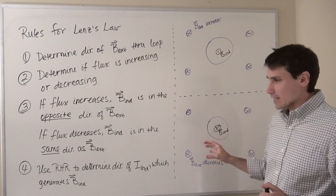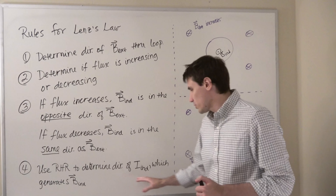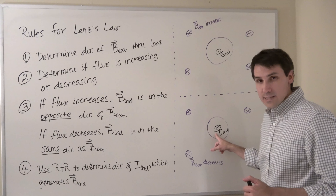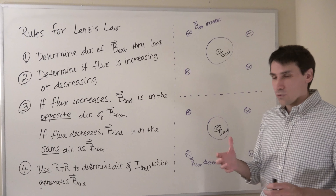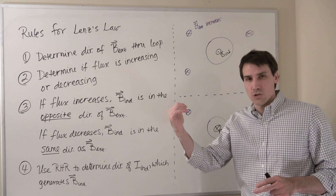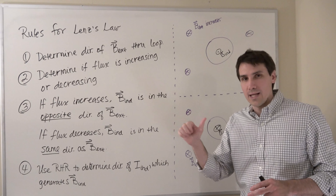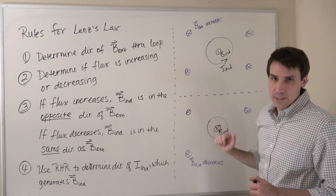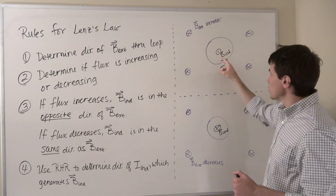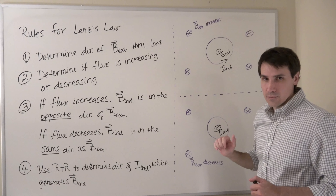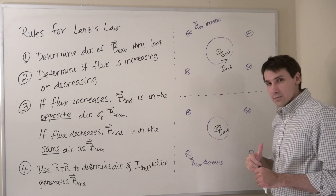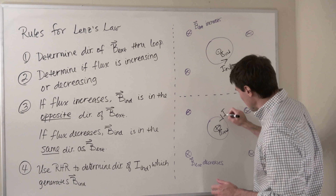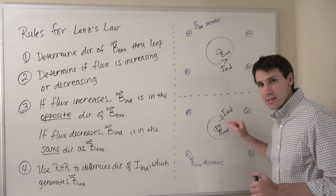Now we have the direction of our induced magnetic field, and there's only one step left: use the right-hand rule to determine the direction of the induced current. The induced current generates this magnetic field at its center, so we use the right-hand rule for loops of current — fingers curl in the direction of the current and the thumb points in the direction of the magnetic field. For the top example, thumb out of the board means fingers curl counterclockwise, so the induced current flows counterclockwise. For the bottom example, induced B into the board means induced current flows clockwise.